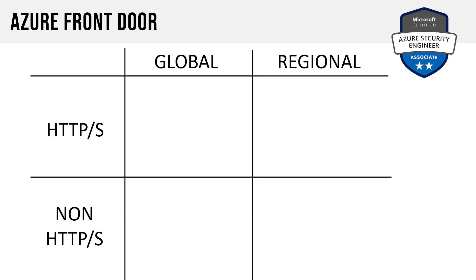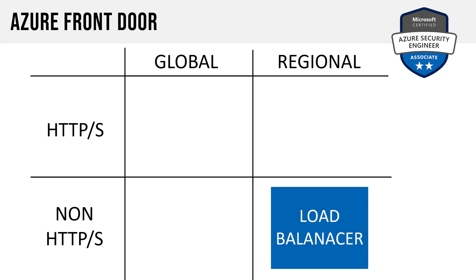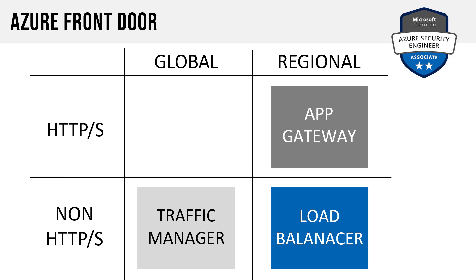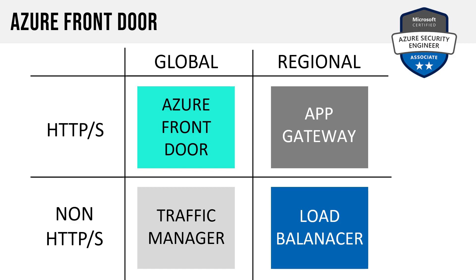Let's talk about our regional and global options. For non-web traffic within an Azure regional data center, a load balancer handles that application traffic. App Gateway handles SSL/TLS traffic regionally. On a global scale, Traffic Manager handles non-HTTP traffic, and Azure Front Door handles HTTPS traffic. While Front Door and Application Gateway are both layer 7 load balancers, the primary difference is Front Door is a global service, whereas Application Gateway is regional.